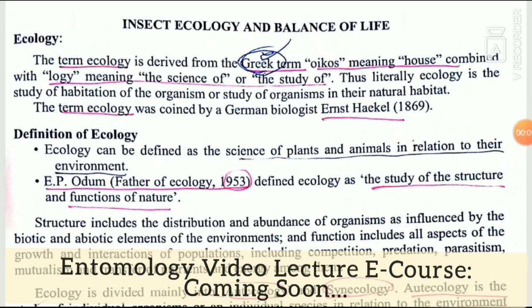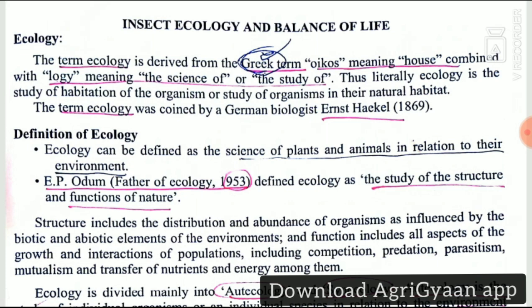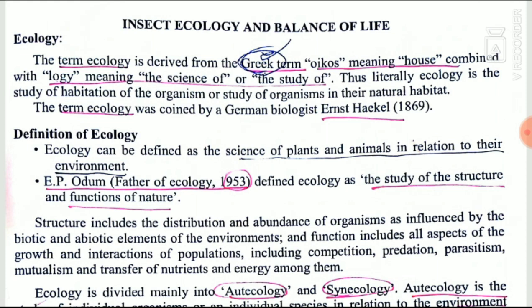Hello guys and welcome to Agri Can. Today we are going to start with ecology. This is a very theoretically based chapter and some questions are bound to come every year — one or two questions generally come in GRF exams. So let's start with the definition first. Ecology is derived from a Greek term: oikos meaning house and logi meaning study. So ecology is the study of organisms in their natural habitat.